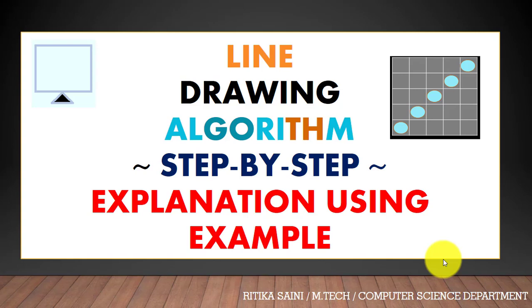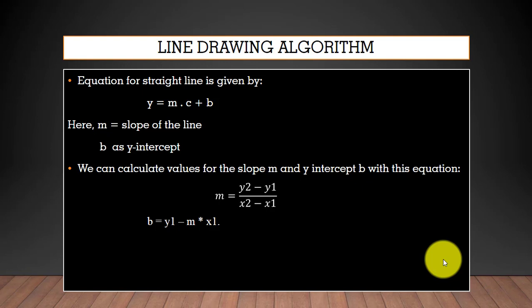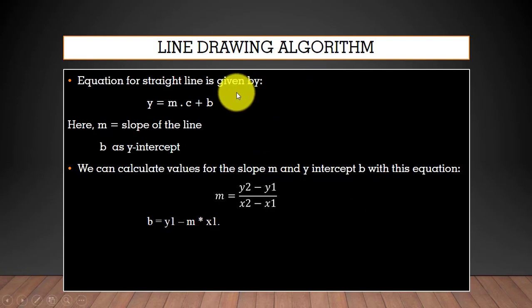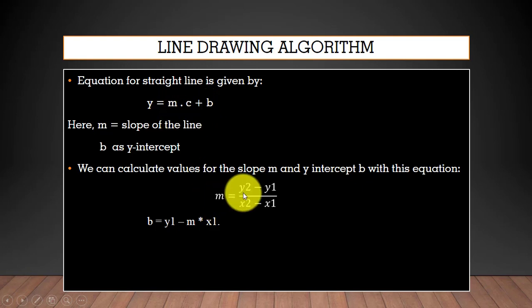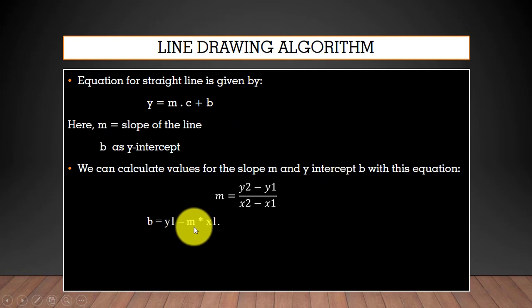In this video you will learn the line drawing algorithm using an example. First of all, as we all know, the equation for a straight line is y = mx + b, where m is the slope of the line and b is the y-intercept. We can calculate the value for m and the value for b using their respective equations.